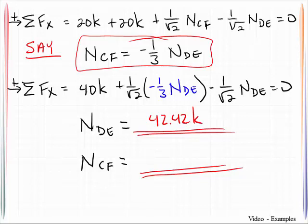That is in tension because it is positive and then we can compute the other one. That will be negative 14.14 kips and that of course is in compression.